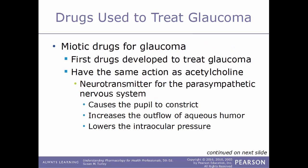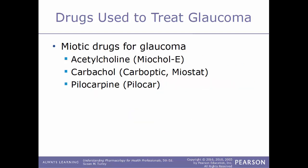Another class of drug used to treat glaucoma are miotic drugs. These were the first drugs developed to treat glaucoma, and have the same action as acetylcholine, a neurotransmitter found in the parasympathetic nervous system. This class of drug causes the pupils to constrict, which increases the outflow of aqueous humor and lowers intraocular pressure. Examples include acetylcholine, sold under the trade name Miochol-E; carbachol, sold under the name Miostat or Carboptic; and pilocarpine, sold under the name Pilocar.